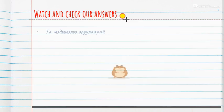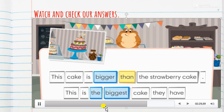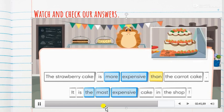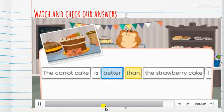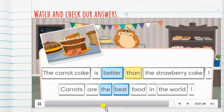This cake is bigger than the strawberry cake. This is the biggest cake they have. The strawberry cake is more expensive than the carrot cake. It is the most expensive cake in the shop. The carrot cake is better than the strawberry cake. Carrots are the best food in the world.